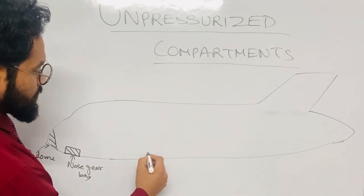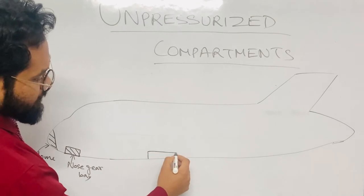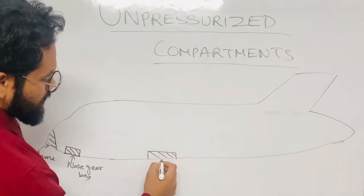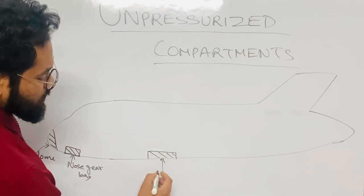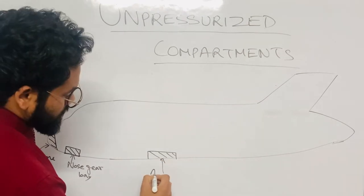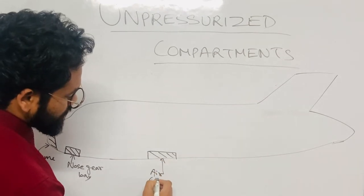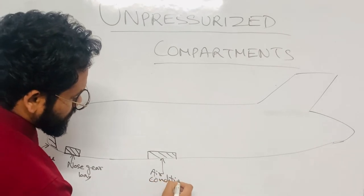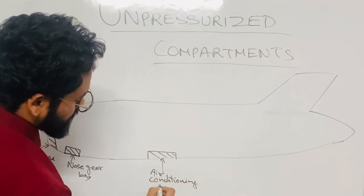Next unpressurized area is the air conditioning compartment, which is in the belly section. So this section is also unpressurized. What is the name of this compartment? Air conditioning compartment.